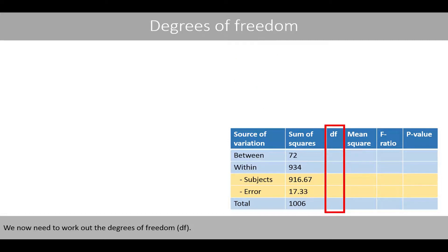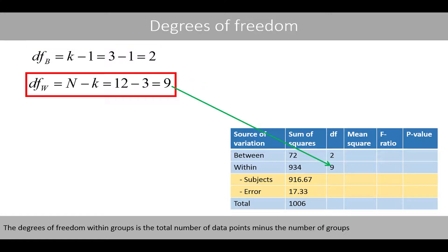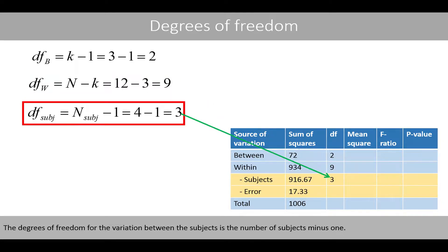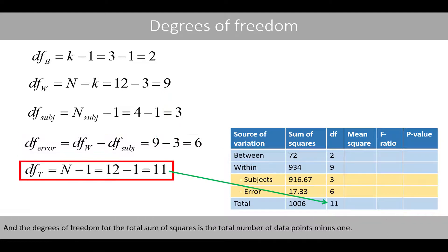We now need to work out the degrees of freedom. The degrees of freedom between groups is the number of groups minus 1. The degrees of freedom within groups is the total number of data points minus the number of groups. The degrees of freedom for the variation between the subjects is the number of subjects minus 1. The degrees of freedom for the error is simply the degrees of freedom of the total within group variance minus the degrees of freedom for the subjects. And the degrees of freedom for the total sum of squares is the total number of data points minus 1.